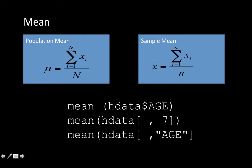Alternatively, we can do the same thing but address the age attribute by its name. Instead of the dollar sign, we use the comma operation, and we put the age within double quotes. So you can do all of these and calculate the mean of the age. Of course, if you want some other attribute, you can do the same thing.